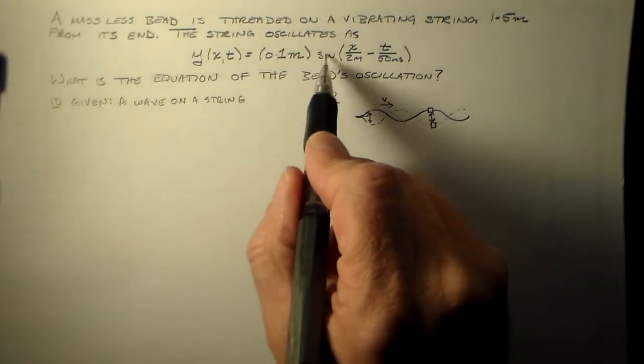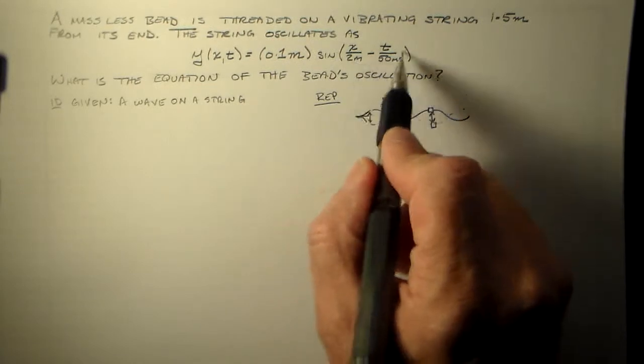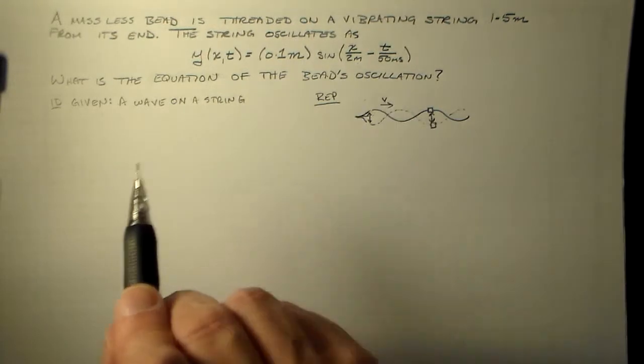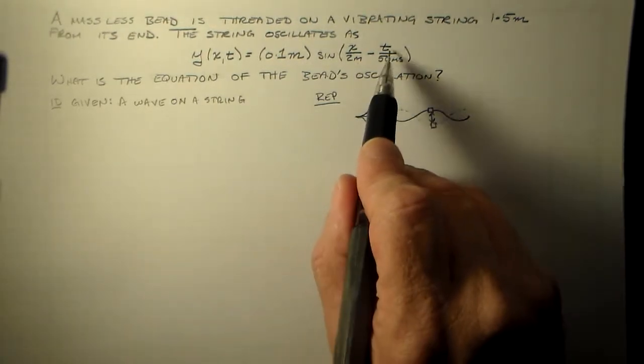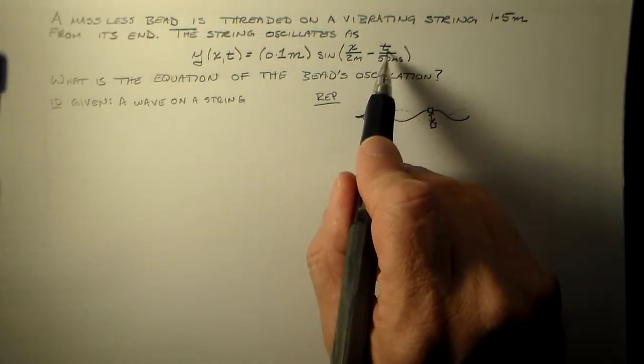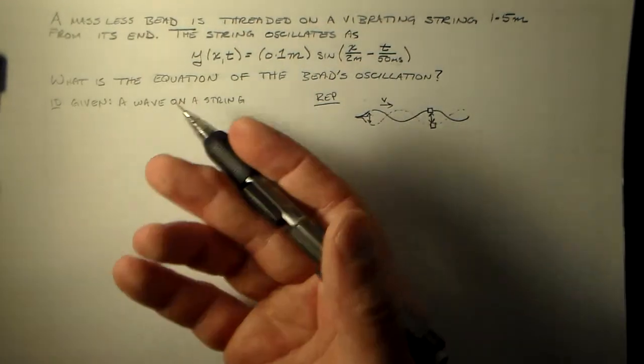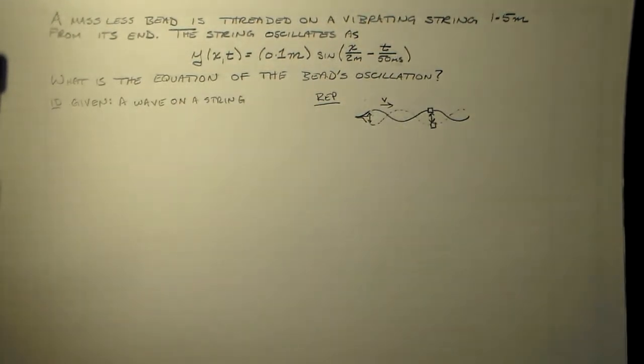The sine is unitless. It takes a unitless argument. That's why the position is divided by something with units of length, with dimensions of length, and the time by something with dimensions of time. It's just necessary to do that so that you can actually use this function.